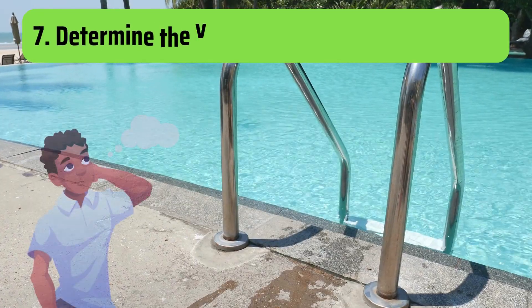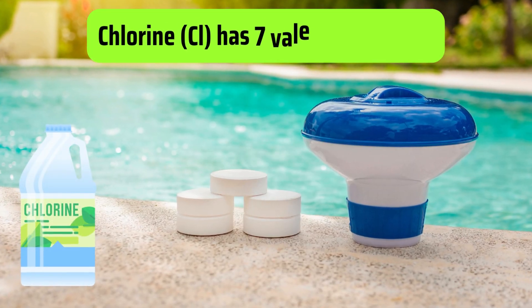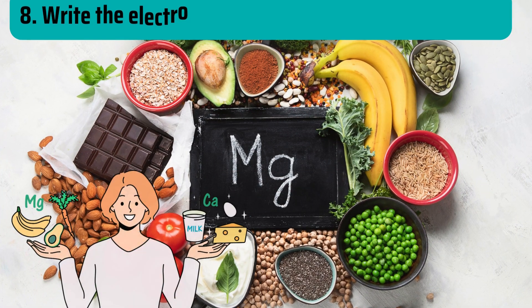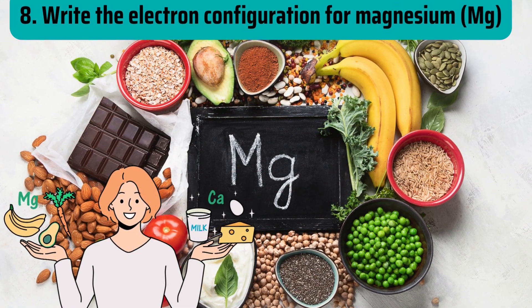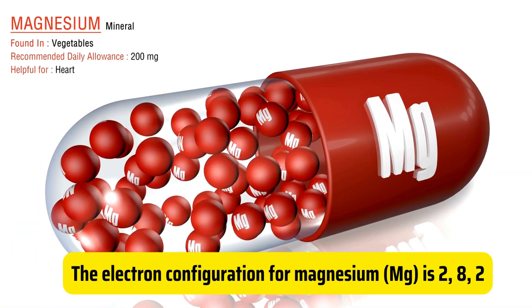Question 7. Determine the valence electrons in chlorine. Chlorine has 7 valence electrons because it is in family 17. Question 8. Write the electron configuration for magnesium. Magnesium is 2 comma 8 comma 2.